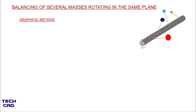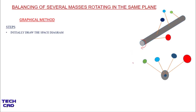Let's find out the steps you have to follow in the graphical method. The first step is you have to make the space diagram. This is a space diagram — I make the side view from this direction. The masses m1, m2, m3, m4 are shown with angles theta1, theta2, theta3, theta4 measured from the horizontal reference line.